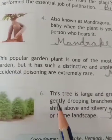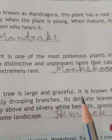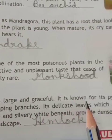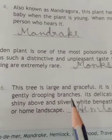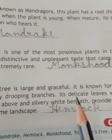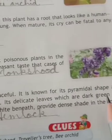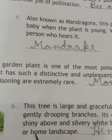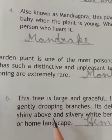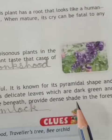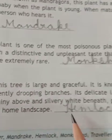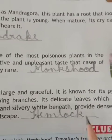It is known for its pyramidal shape and gently drooping branches. Its delicate leaves, which are dark green and shiny above and silvery white beneath, provide dense shade in the forest or home landscape. This is Hemlock.